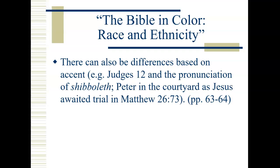There could also be differences based on accents. Judges 12 illustrates this with the Shibboleth test — if you couldn't say it the way locals said it, they knew you weren't from there. Similarly in the United States, how you pronounce a particular city reveals where you're from. Peter is recognized in Matthew's Gospel as a Galilean because of his accent. But in Peter's case, this isn't really an ethnic difference — Galilean Jews are not ethnically different from Judean Jews; it's recognizing someone is from a different place.